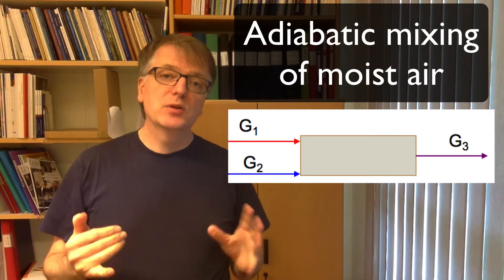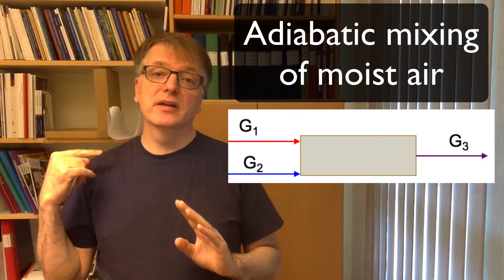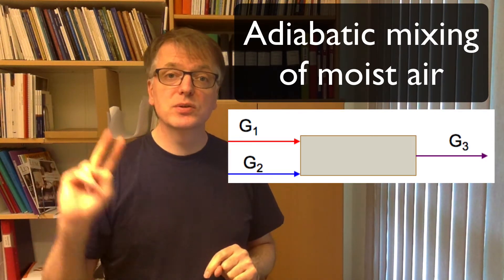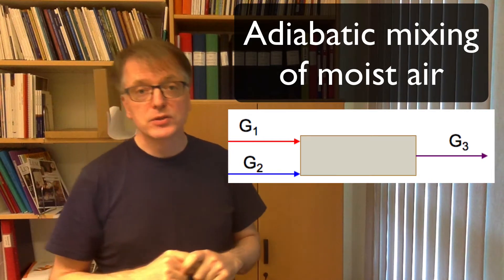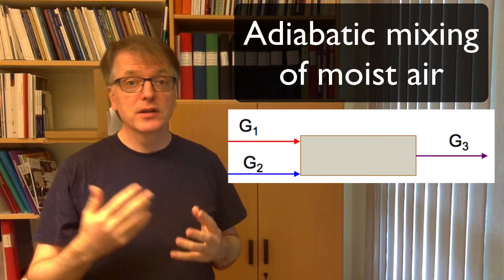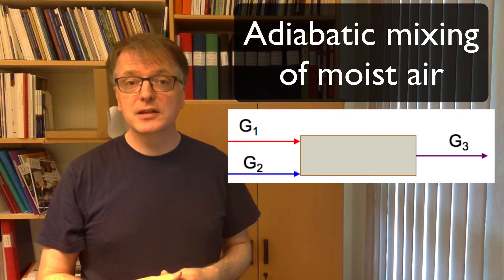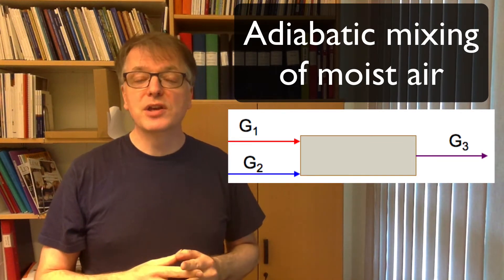To understand that we need to make mass balances and an energy balance, and we have two components and thus we can make two mass balances. So we have this system here. Two air flows g1 and g2 meet and mix adiabatically to a third stream g3. What happens?